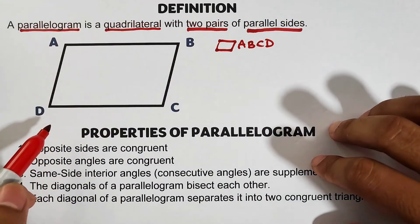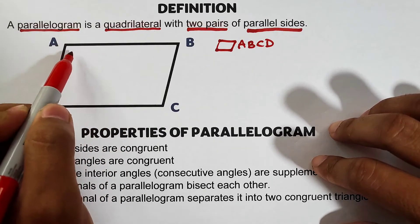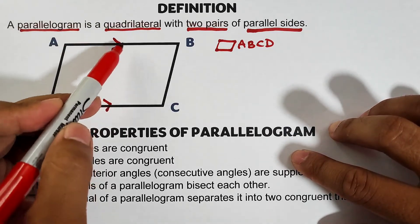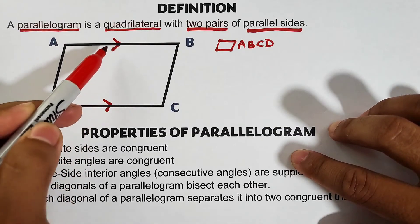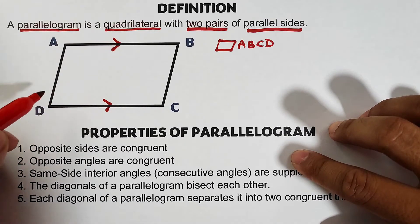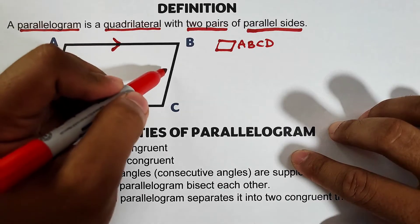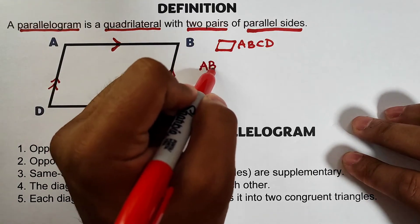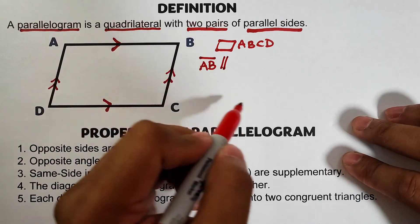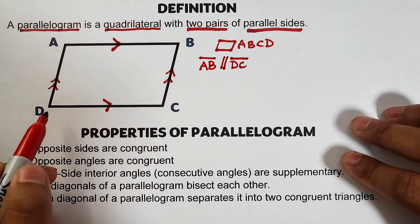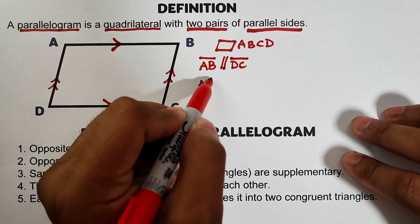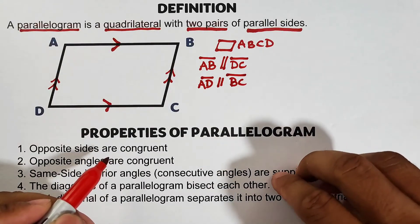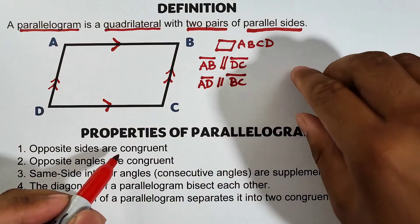Let's show the two pairs of parallel sides. The first pair: side AB is parallel to side DC — this symbol represents parallel sides. The second pair: side AD is parallel to side BC. In symbols, AB is parallel to DC, and AD is parallel to BC.